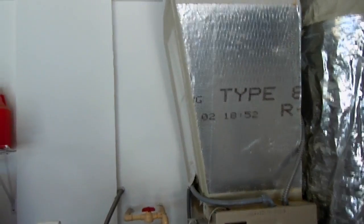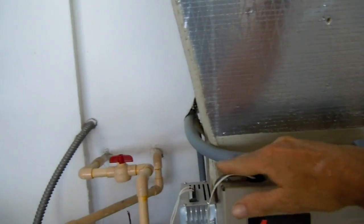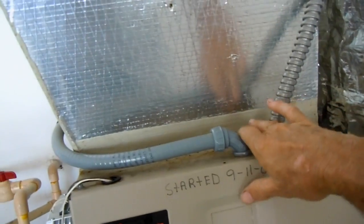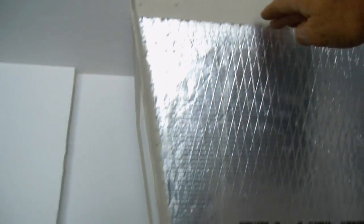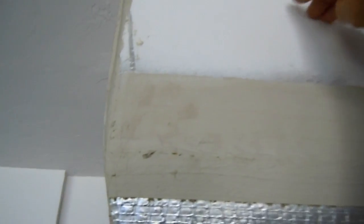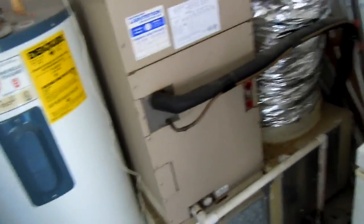You're supposed to make sure that you have a minimum of three feet from your supply end of your air handler, up your plenum, to where you're going to make your hole. You should have at least three feet.